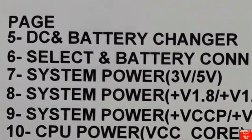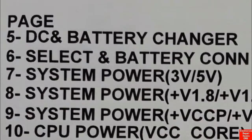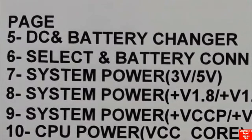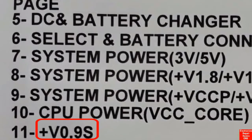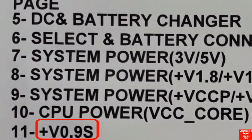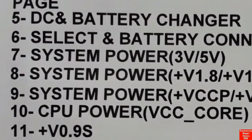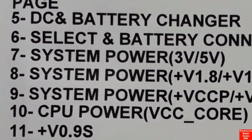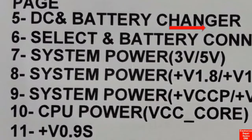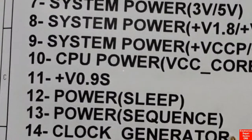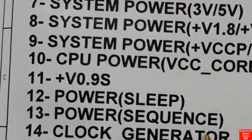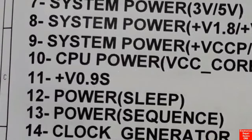In page eleven we have plus 0.9 volt — this is the VTT, or the RAM VTT. Basically the RAM has two kinds of power: the main power of 1.8 volt, and the half of 1.8 volt which is 0.9 volt, the power for RAM terminals. The type of RAM here is DDR2.